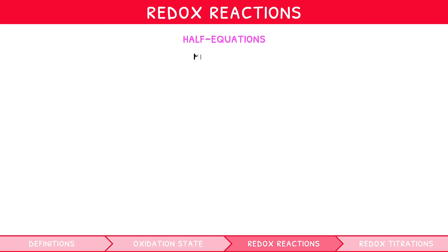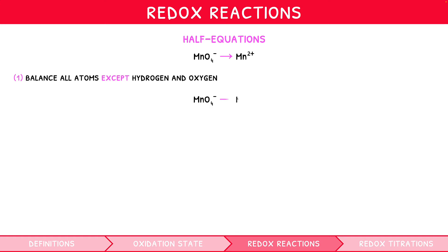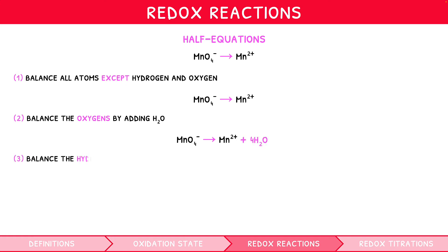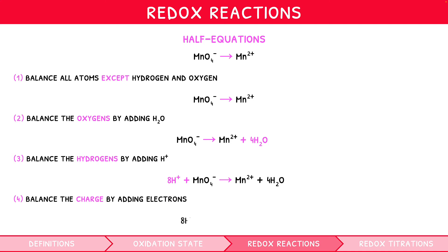Consider the following reaction: MnO₄⁻ → Mn²⁺. To balance it: first, balance all atoms except hydrogen and oxygen — manganese is already balanced, so nothing needs to be done. Second, balance the oxygens by adding H₂O to the relevant side — here, four oxygens must be added to the right side, so 4H₂O on the right. Third, balance the hydrogens by adding H⁺ to the relevant side — here, 8H⁺ must be added to the left side. Fourth, balance the charge by adding electrons — there is a charge of 7+ on the left and 2+ on the right, so we add 5 electrons to the left side.